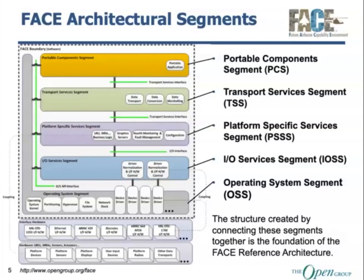How a component gets data from an external source is handled by the IO services segment. Software components here provide the capability to either get data from or move data to a certain bus, device driver, or external piece of hardware — this is how you get data in and out of your FACE reference architecture. The operating system service segment is the final segment. It doesn't provide an operating system itself, but provides the foundation for how the FACE reference architecture accesses capabilities via the operating system, achieved via APIs — most notably POSIX and ARINC 653.